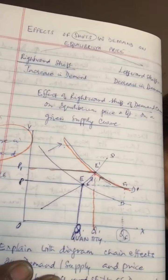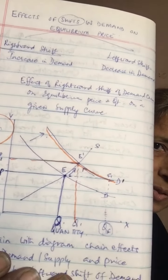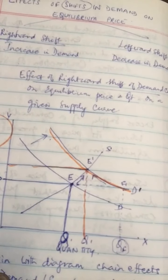Welcome to class. In this lesson we are going to study the chain effects — what are the chain effects of the shifts in demand. We have studied two types of shifts: increase in demand and decrease in demand. We will look at the impact on equilibrium price and equilibrium quantity when there is an increase or decrease in demand on a given supply curve.